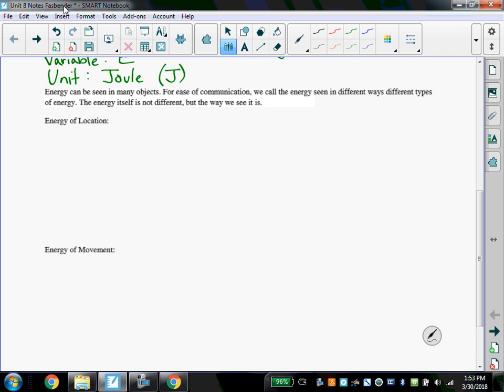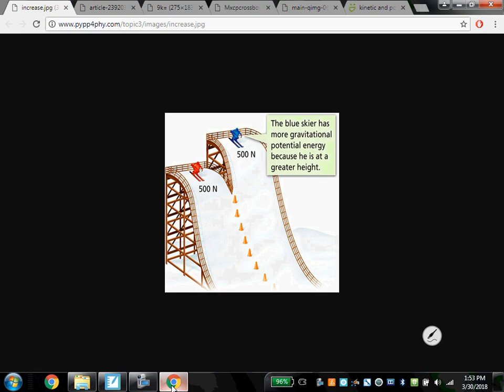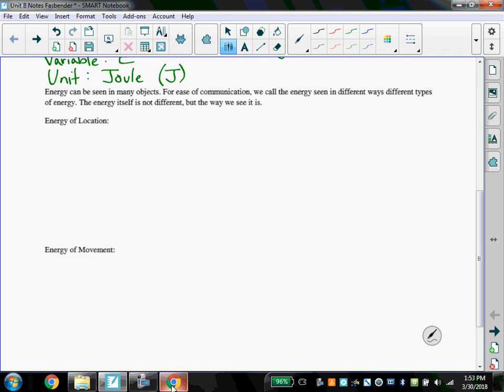So let's start with this first type. It is energy of location. This one's pretty easy to understand because if we have something that's higher than something else, we would expect that it would be able to cause a greater amount of change, right? For example, this blue skier, he has more energy because he's at a greater height. So this energy of location is what we would call gravitational energy.